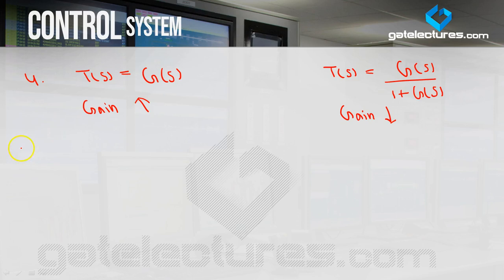The next difference: the bandwidth of the open loop system is less, because we know that the gain-bandwidth product is always constant. If gain is high, bandwidth will be less. And the bandwidth of the closed loop system is high. So where you need high bandwidth, you go for the closed loop system.